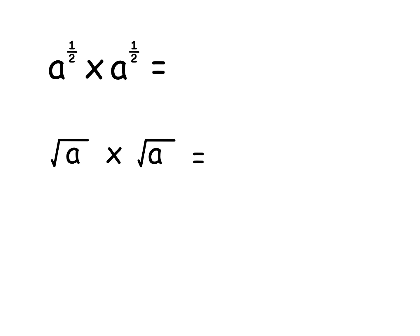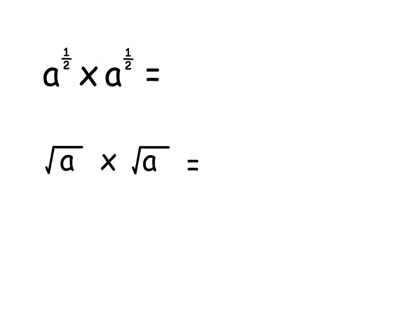So if you had a to power half times a to power half, you would add those powers. So we would do half add a half, which is just one. So that would give you a to power one. But of course, we don't write that. We just read that as a.